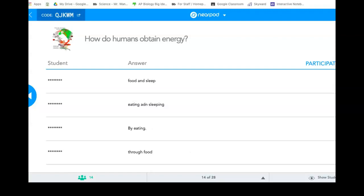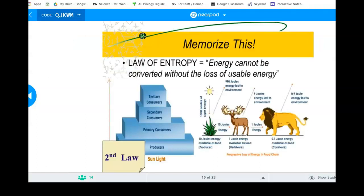So law of entropy is the energy cannot be converted without the loss of usable energy. And this is what we were talking about. We can see that the sun is producing or giving this plant like a thousand joules of energy. But only 10 joules are being transferred to the animal that eats it. Right? So there's a 10% rule. Only 10% of energy is transferred through the food chain. 90% of the energy is either used by the organism or lost as heat to the environment. That is a state concept. Right? The whole state wants you to know that.